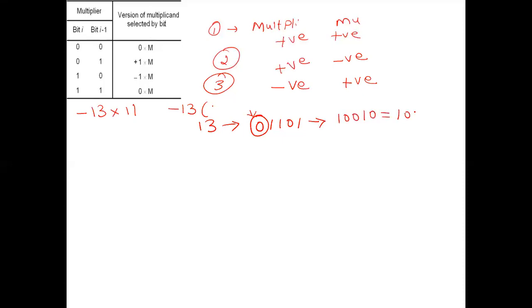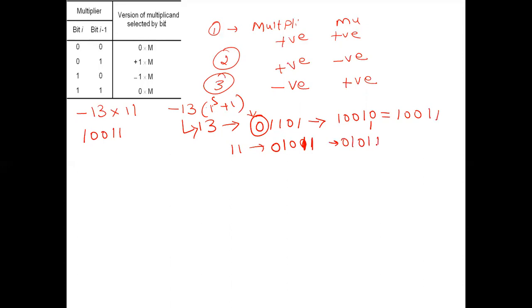Taking the one's complement plus 1, minus 13 becomes 1 0 0 1 1 in two's complement. For plus 11: 11 in binary is 1 0 1 1, so as a positive 5-bit number it is 0 1 0 1 1.